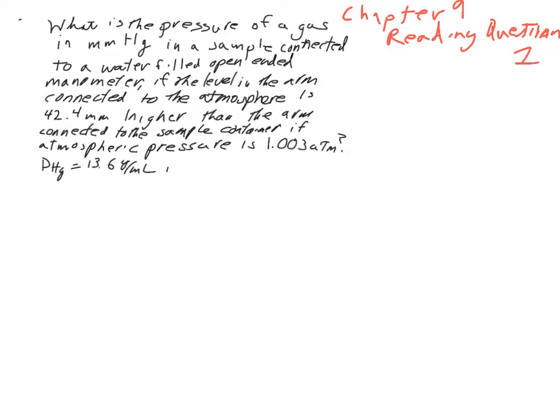What is the pressure of a gas in millimeters of mercury in a sample connected to a water-filled open-ended manometer if the level in the arm connected to the atmosphere is 42.4 millimeters higher than the arm connected to the sample container, and atmospheric pressure is 1.003 atm?